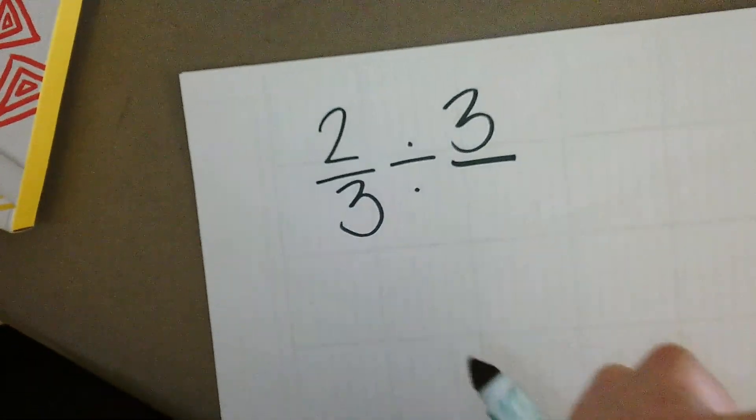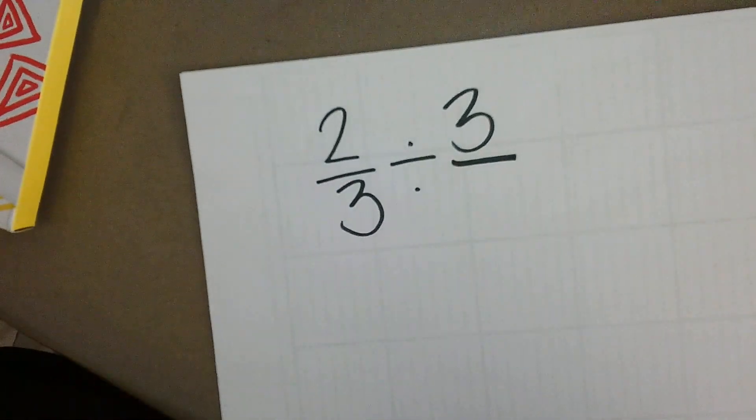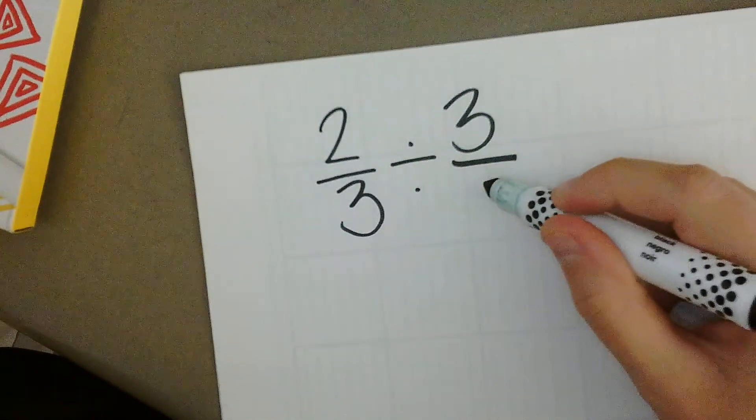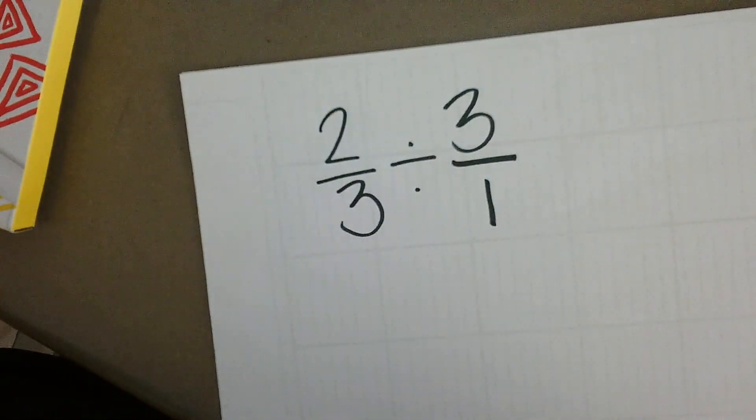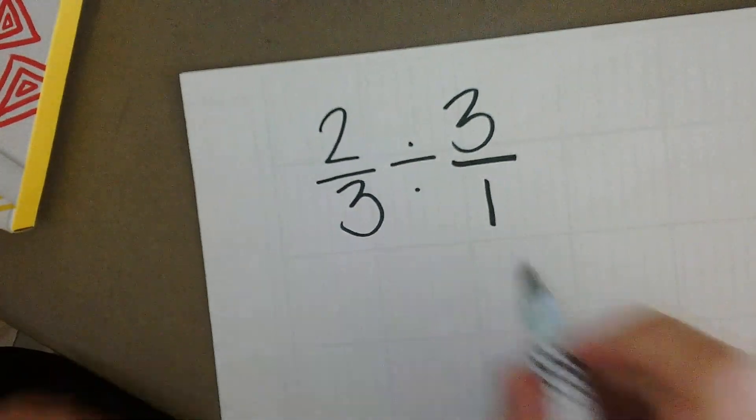First step is to make our whole number of three a fraction. Every whole number has a secret denominator of one. Now there are a couple ways to do this division problem.